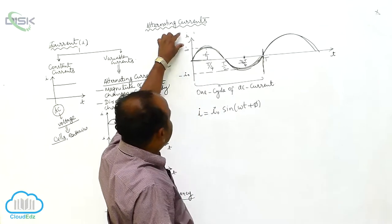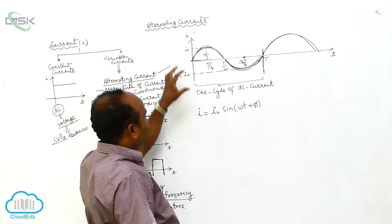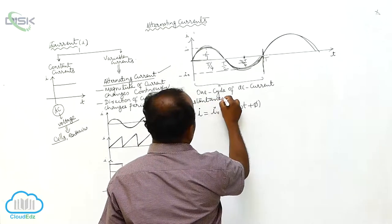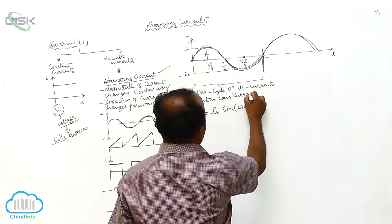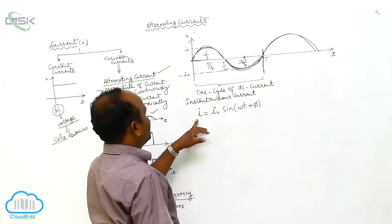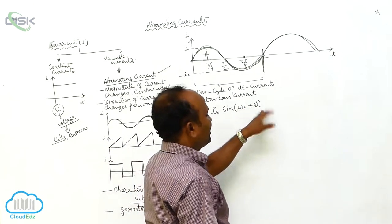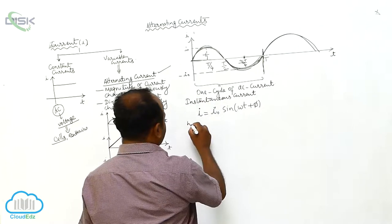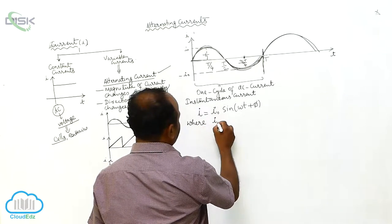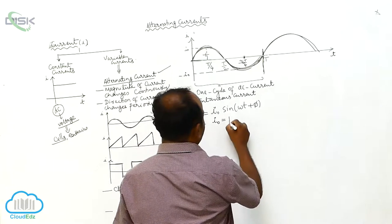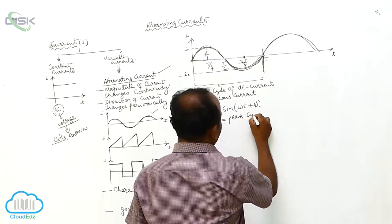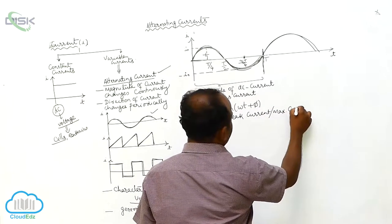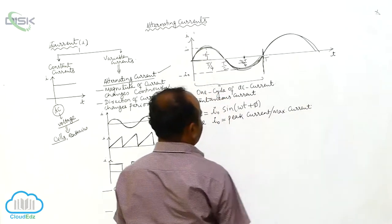If I represents the instantaneous current, then the instantaneous current is given by I = I₀ sin(ωt + π). Here, I is the instantaneous current, where I₀ is equal to peak current, or maximum current.